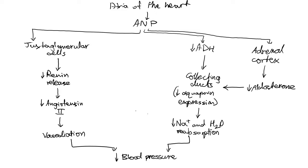The fourth effect is quite similar to what we've discussed with ADH and aldosterone. ANP actually has a direct effect on the collecting ducts of the kidneys, preventing water from flowing from the collecting ducts back into the blood to increase blood volume. It has a similar effect to ADH in that it prevents water from flowing back and allows that water to flow back into the urine and out of the body.